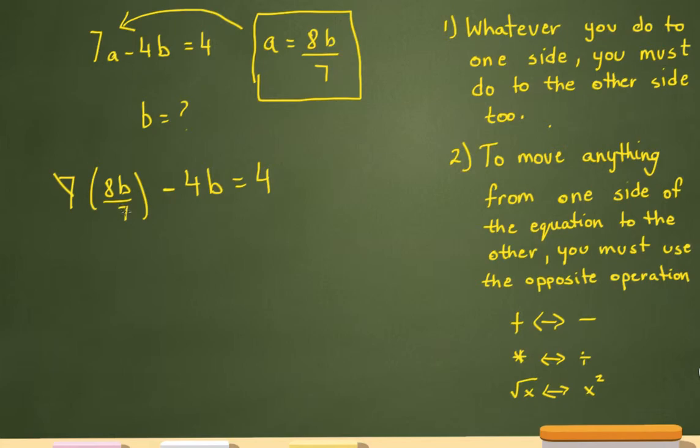You can cancel out the 7 over here with this 7, which leaves us with 8b minus 4b equals 4, and 4b equals 4.